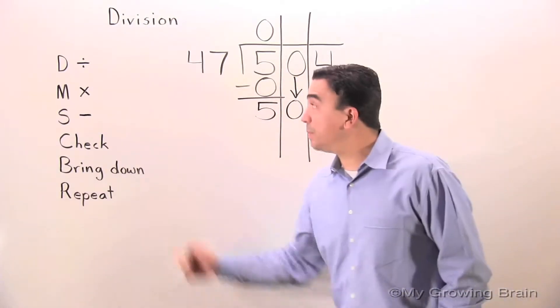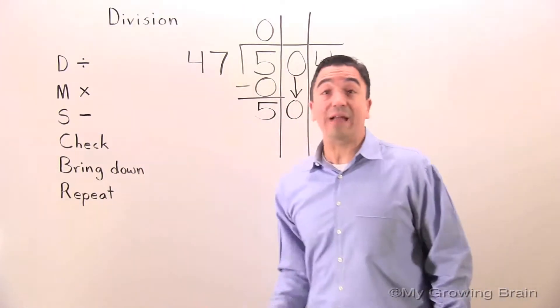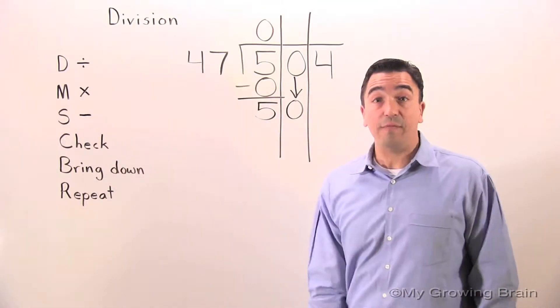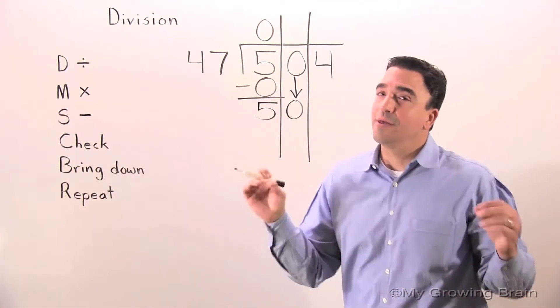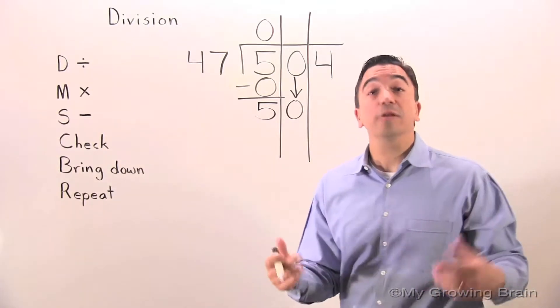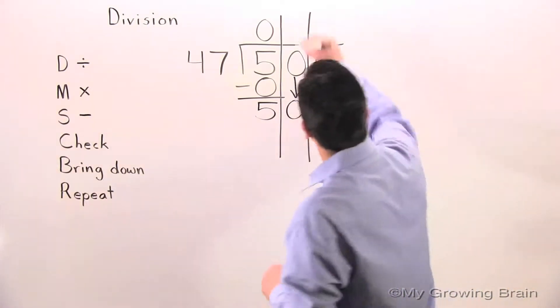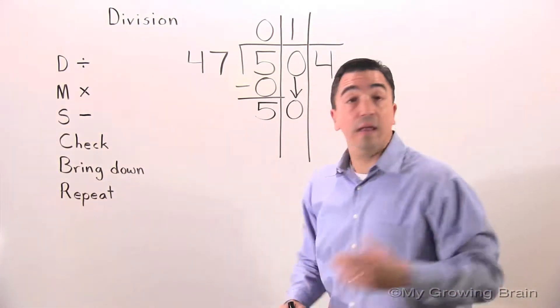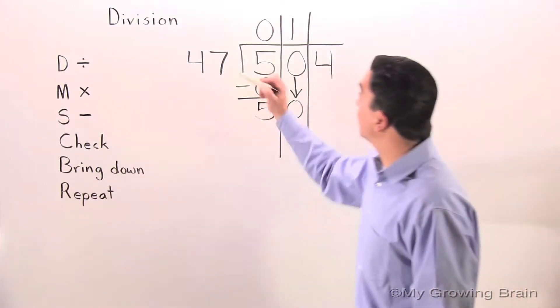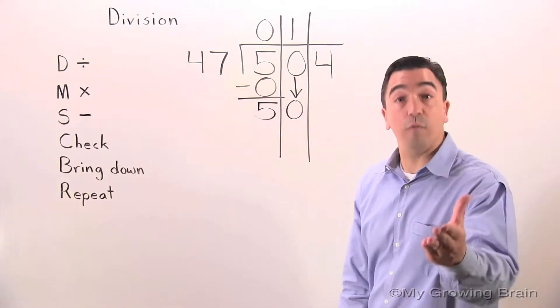Next step, repeat. Repeat the process all the way back to divide. 50 divided by 47 or 47 into 50. This one's quite easy because I know 47 goes into 50 one time. Next step, multiply. 47 times 1 is 47.